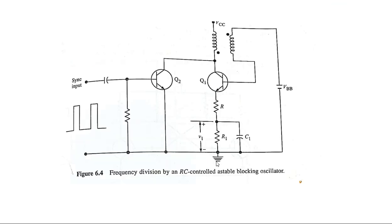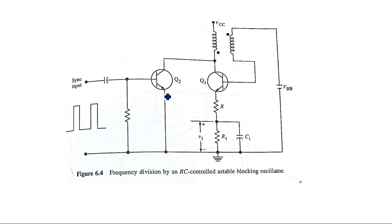Now let us see the circuit diagram. This is the blocking oscillator where Q2 is connected in common emitter configuration and Q1 is connected in common collector configuration. The collector is common between input and output for Q1, while Q2 is in common emitter where the emitter is common between input and output.